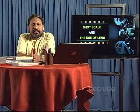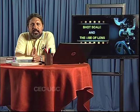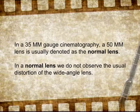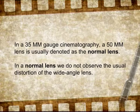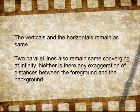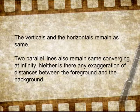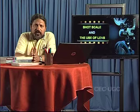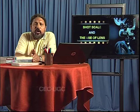The normal lens, or middle focal length lens: in 35mm gauge cinematography, a 50mm lens is usually denoted as the normal lens. With a normal lens, we do not observe the usual distortion of the wide-angle lens — the verticals and horizontals remain as verticals and horizontals, and two parallel lines remain as two parallel lines converging at infinity. Neither is there any exaggeration of distances between the foreground and the background. In other words, a normal lens mimics the vision of the human eye.